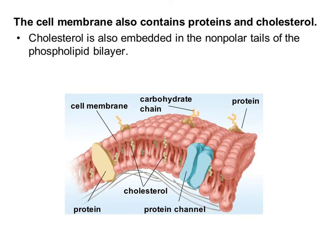The last thing we're going to look at is not actually a protein, but a lipid, which is cholesterol. Cholesterol is embedded in the nonpolar tails of the phospholipid bilayer — you can see all those little green steroid cholesterol molecules. Since steroids are lipids, that's why they interact with the nonpolar fatty acid tails of the phospholipid. Cholesterol has three main functions: first, it keeps those nonpolar tails from getting stuck to each other, helping to maintain the fluidity and flexibility of the cell membrane; second, it helps to strengthen the cell membrane; and third, it helps to stabilize the proteins in the cell membrane.